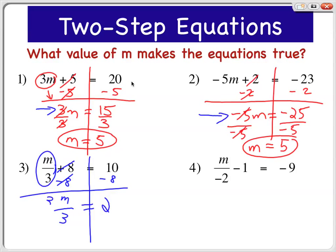In number 3 here, I'm going to multiply both sides by positive 3. That makes the 3's cancel, and all you're left with is m equals 6.